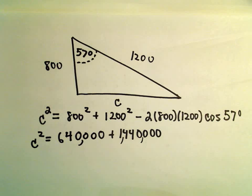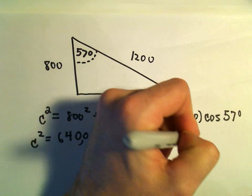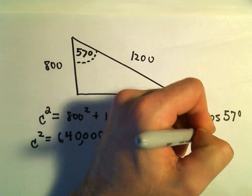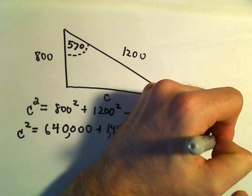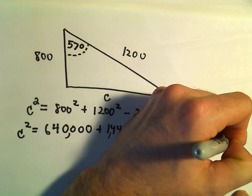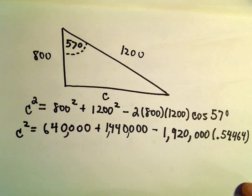So 2 times 800, that's just going to be 1,600. If we multiply that by 1,200, we'll get 1,920,000. I'm going to take cosine of 57 degrees. Cosine of 57 degrees, I'm getting that to be 0.54464. I'm going to use a little more accuracy here.